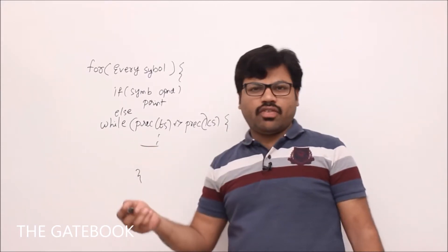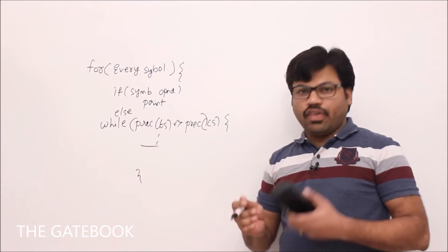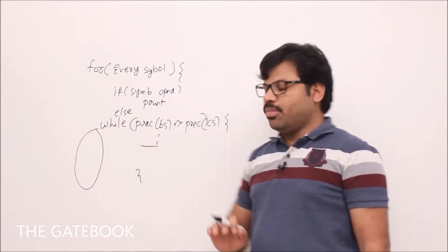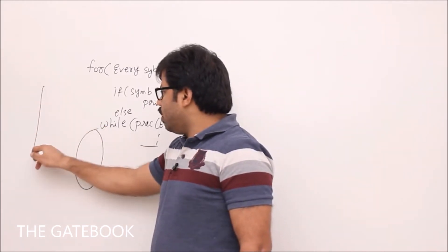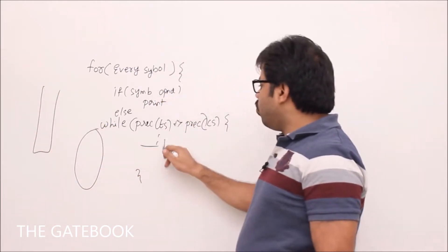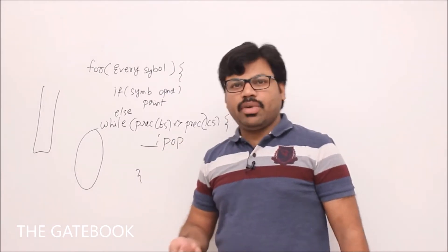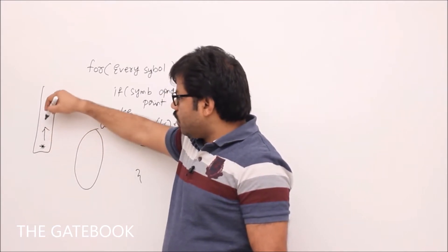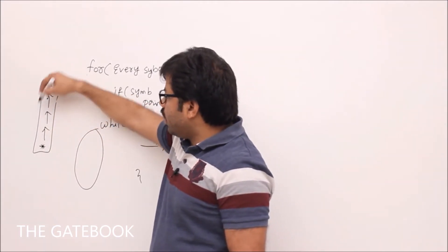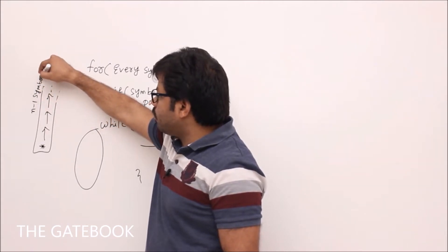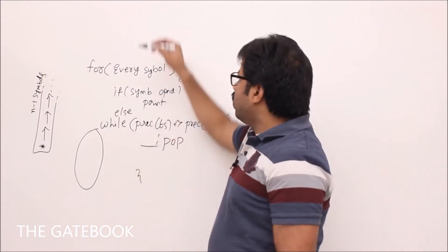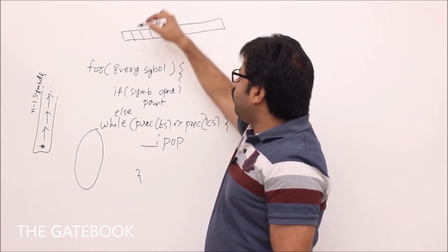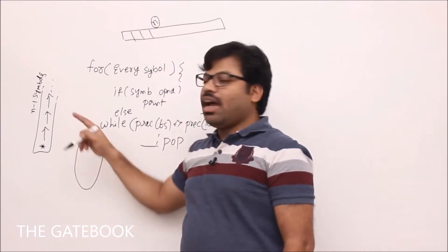My question is: what is the time complexity of this while loop for one symbol? In the while loop, we are simply popping elements. In the worst case, imagine you have symbols like star, power, power — if there are already n minus one symbols on the stack, and our input length is n.